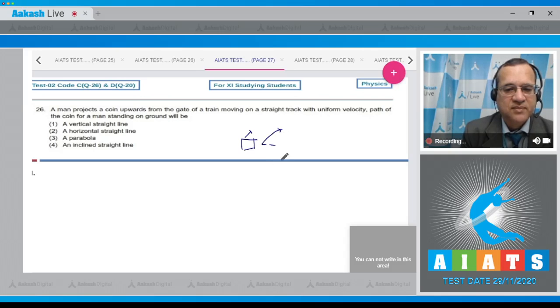To the ground observer, this path will be the parabola. The options are: horizontal straight line, a parabola, or inclined straight line. Answer is parabola. It is coming under the gravity and was given certain velocity into the air, so answer to this question is option number 3.